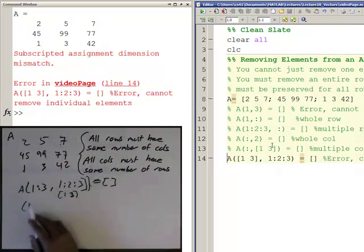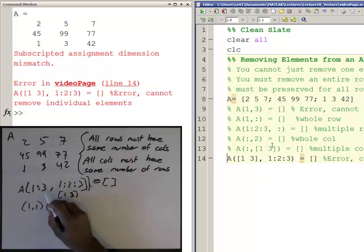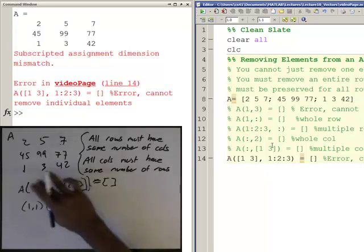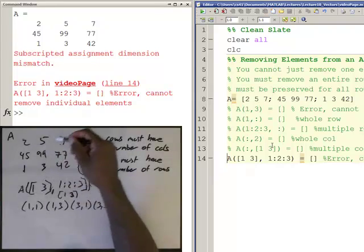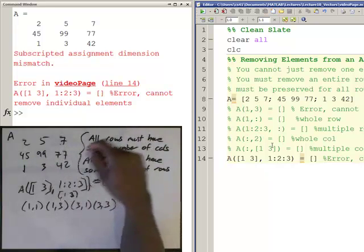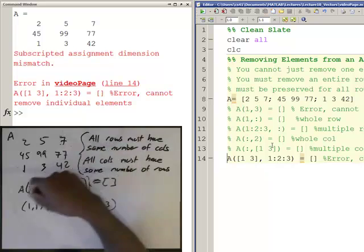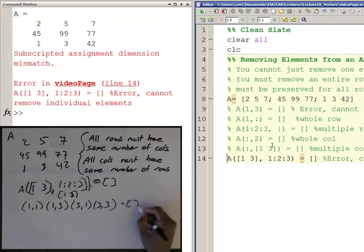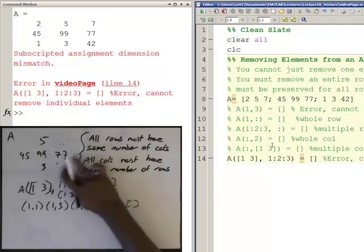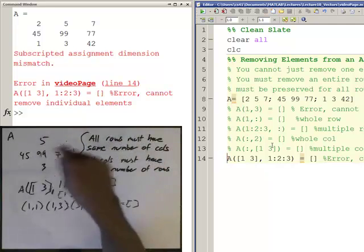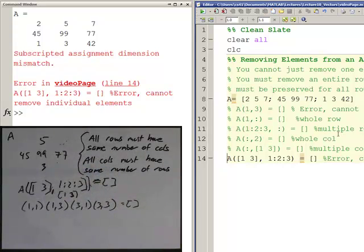Remember from before: (1,1), (1,3), and then row (3,1) and (3,3). So it's going to try to put it in (1,1), (1,3), (3,1), and (3,3). Now when we were adding stuff or changing stuff or changing elements, we were able to place these at the corners because that still maintained this integrity here - all rows same number of columns, all columns same number of rows. But if you try to put an empty vector into all four of these, which is what this line is essentially trying to do, basically you'd be erasing the four corners. Now not all rows have the same number of columns and not all columns have the same number of rows. So that's why line fourteen throws an error.